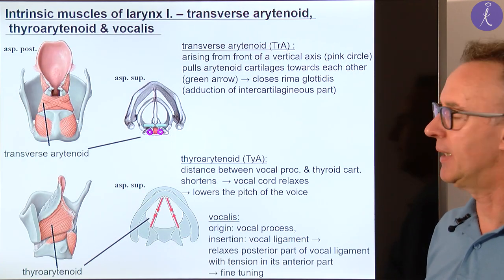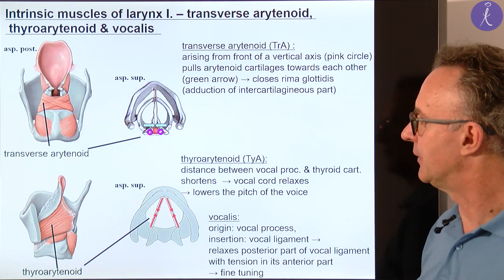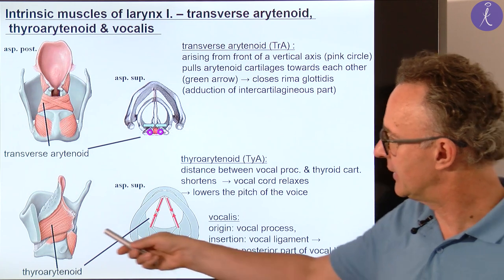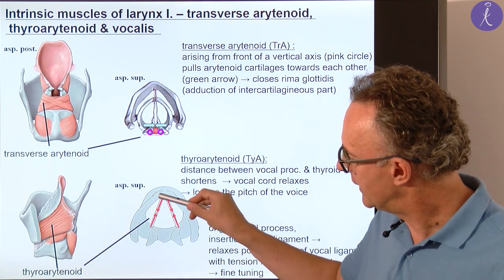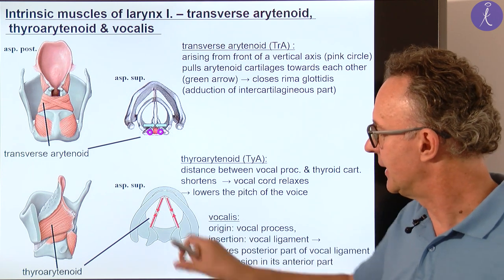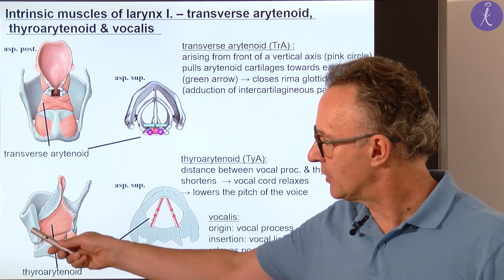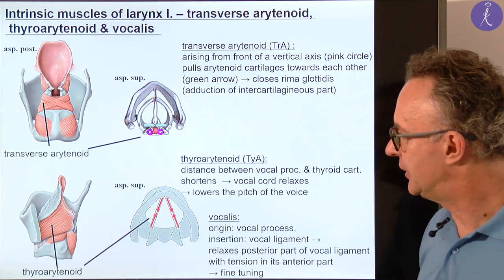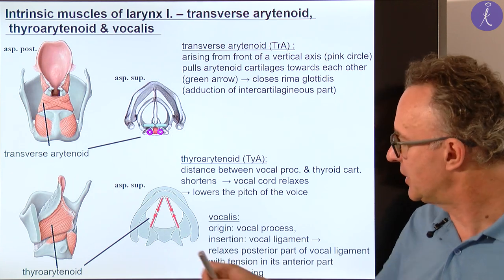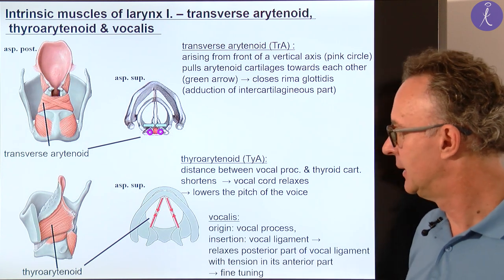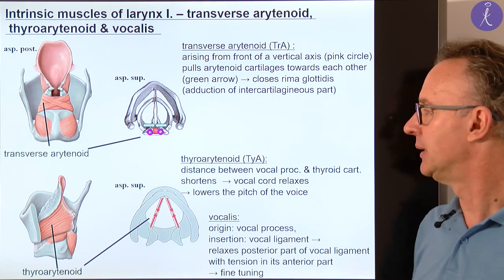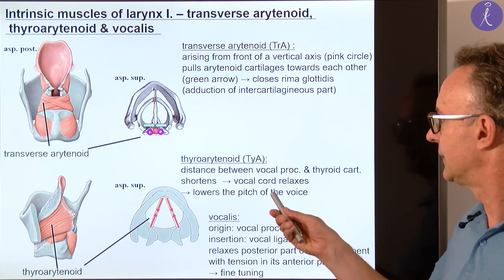In the next few slides we see the other muscle group, the intrinsic muscles of the larynx. First I'd like to describe the functional antagonist of the previous — the thyroarytenoid. It bridges the same distance as the true vocal ligament: from the inner surface of the lamina of the thyroid to the arytenoid cartilage, hence the name thyroarytenoid. When this muscle contracts, the two endpoints of the true vocal ligament come closer. That's why it is able to relax the vocal fold, enabling us to lower the pitch and generate deeper frequencies.